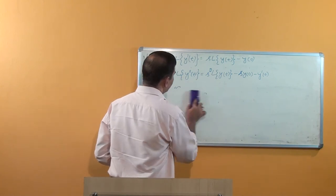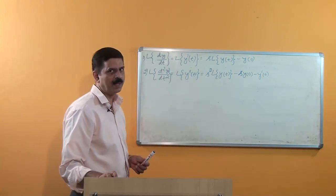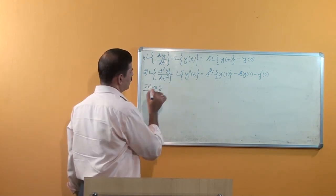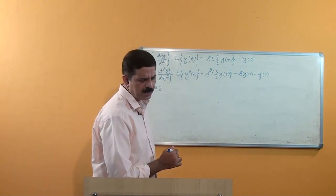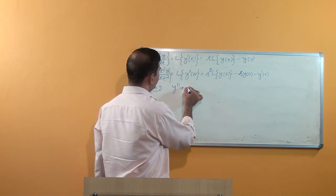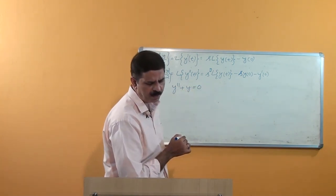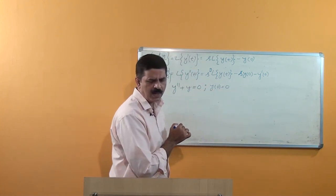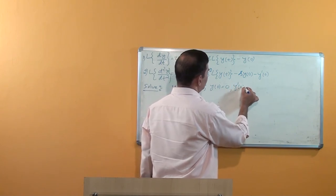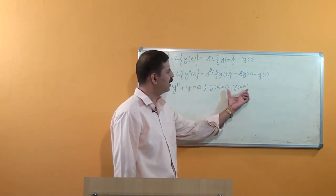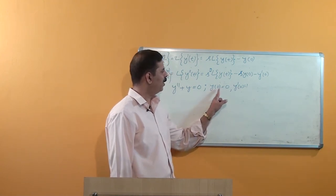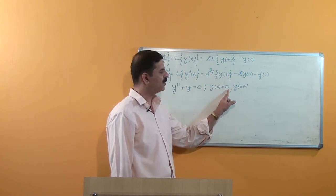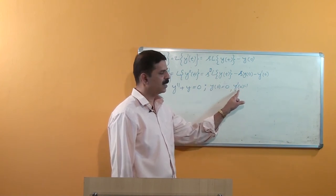Using these formulas we can solve a given IVP. For your knowledge, here is a simple problem: solve the IVP where the equation equals 0, with initial conditions y(0) = 0 and y'(0) = 1. These are the initial conditions given, meaning x₀ = 0, y₀ = 0, and similarly for the derivative.